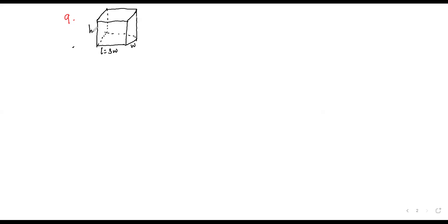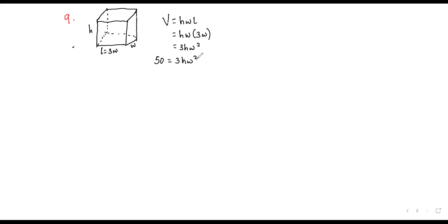Now, what do we know? We know that the volume should be given by height × width × length. Height we don't know. Length is 3 times the width. So volume = H × W × 3W = 3HW². But then we are told the volume is 50, so 3HW² = 50, meaning H = 50 / (3W²).